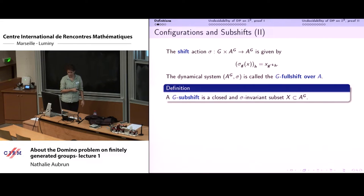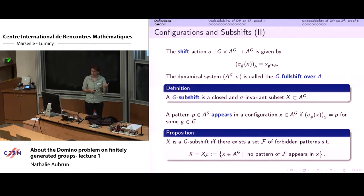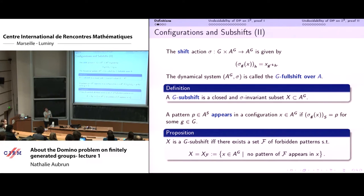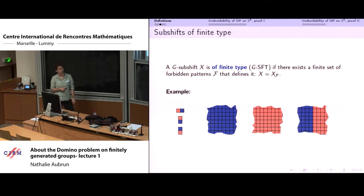The objects we will consider are subshifts. There are two ways to define them: topologically, as closed and shift-invariant subsets of the set of configurations, or combinatorially — which is the approach I will use. These closed shift-invariant sets are the same as sets of configurations that avoid some patterns. To define a subshift it is enough to give a set of forbidden patterns. Among these subshifts we concentrate on subshifts of finite type, those defined by a finite set of forbidden patterns.